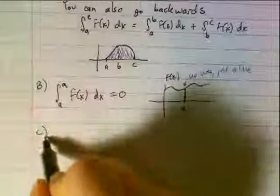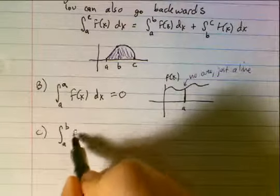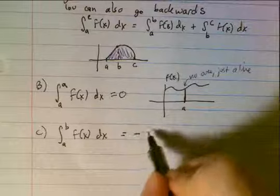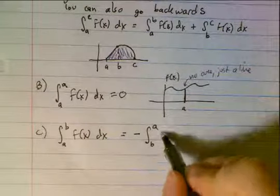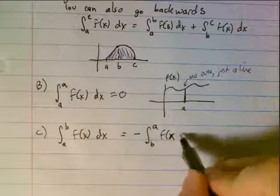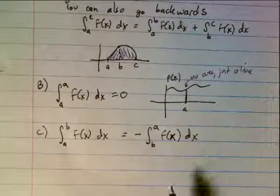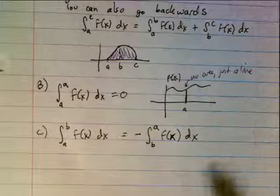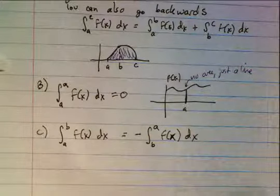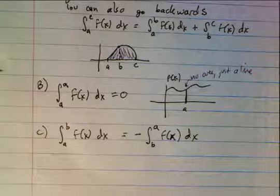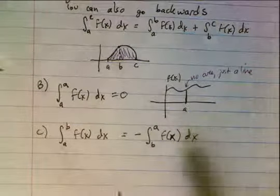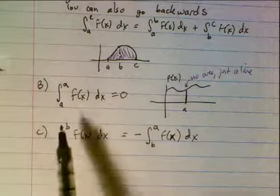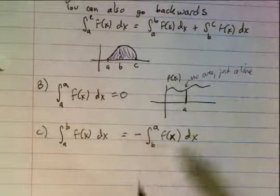Another rule: the integral from a to b of f(x) dx is the opposite of the integral from b to a of the same function. You may have seen this if you accidentally reversed the order of your bounds in a problem and ended up with the same answer but negative. This is also useful if we know something about the integral from b to a and want to find the integral from a to b — just negate it to reverse the order.